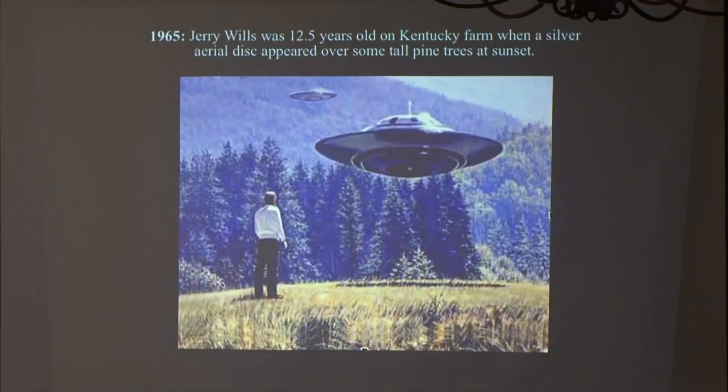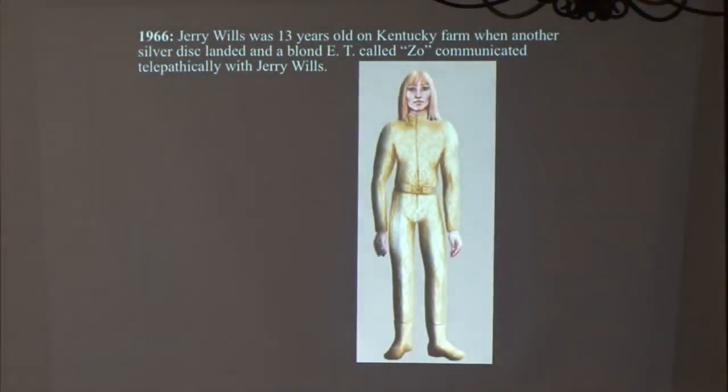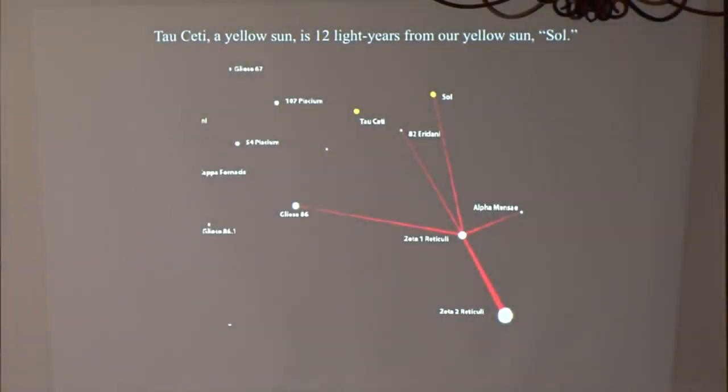In his mind, Jerry Wills heard a telepathic thought voice from whoever was in the silver craft, saying that these unseen visitors would return to meet Jerry again in the future. A year later, in July 1966, Jerry was face to face with a tall, blonde-haired, blue-eyed extraterrestrial male named Zoe. Zoe said he was from a humanoid civilization on a planet orbiting the star Tau Ceti, about 12 light years from Earth.